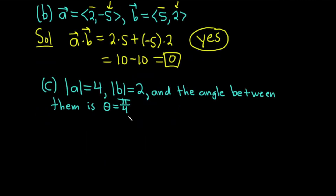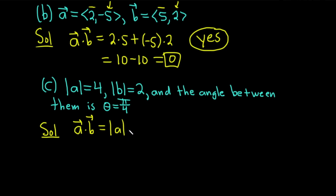Part C. This time we're given different information. The magnitude of A is 4 — that's the length of the vector — and the magnitude of B is 2. The angle between the vectors is theta equals pi over 4. We're going to use an important formula: A dot B equals the magnitude of A times the magnitude of B times the cosine of theta, where theta is the angle between them.